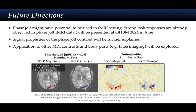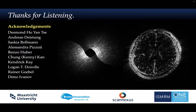Future directions of this work involve looking at the phase jolt contrast in an fMRI setting. We have already observed very strong task-related responses derived by computing phase jolt fMRI time series. We are still testing multiple datasets to quantify these responses, but it is exciting to see that strong task responses can be straightforwardly computed from purely phase data. Here you can see functional activity of the visual cortex derived by magnitude BOLD and the phase jolt contrast computed purely on the phase data. With that, thank you for listening.